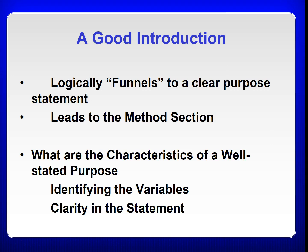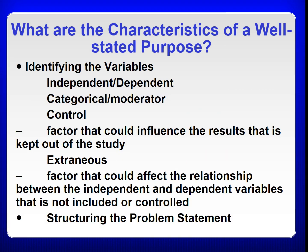Clarity in the statement is an important aspect of sentence structure. To summarize, a well-stated purpose should identify the variables — including independent and dependent variables, categorical or moderator variables, control variables (factors that could influence the results that are kept out of the study), and extraneous variables (factors that could affect the relationship between independent and dependent variables that are not included or controlled). Structuring the problem statement is very important.